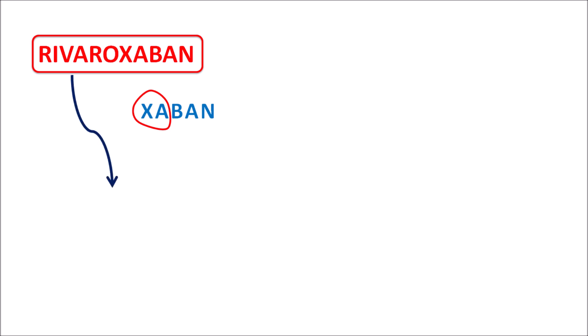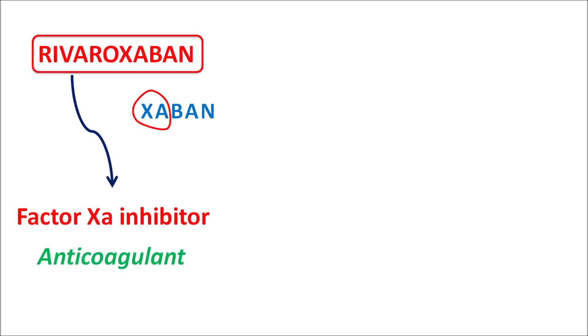So rivaroxaban is one of the factor 10a inhibitors, and this drug acts as an anticoagulant to inhibit the formation of the clot by inhibiting the coagulation cascade. Since factor 10a plays an important role in coagulation pathways, inhibition of this factor results in decreased coagulation.